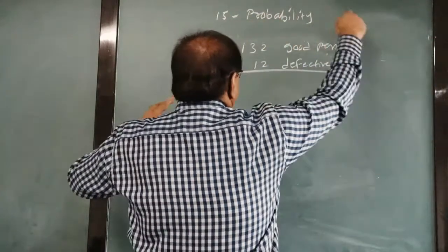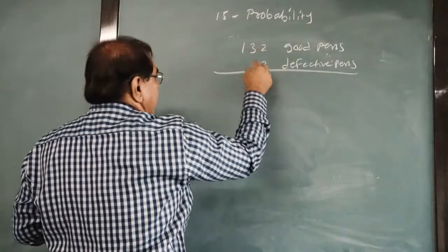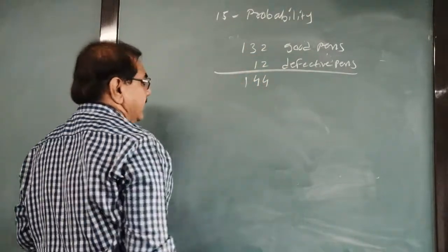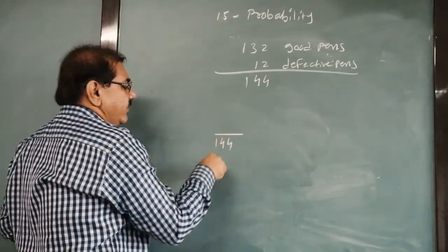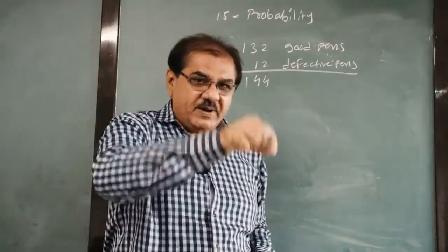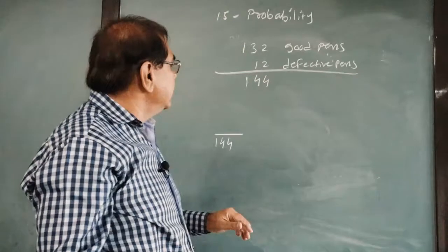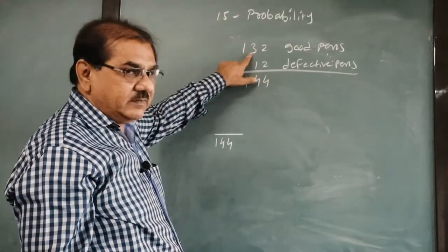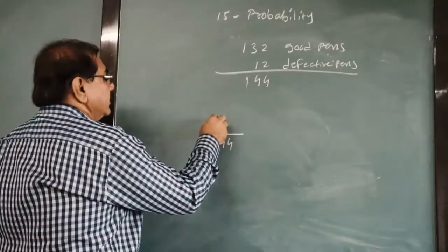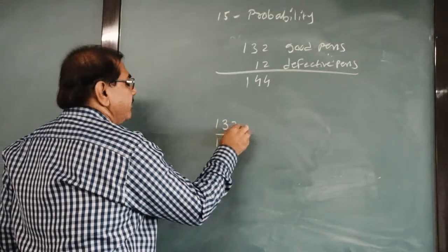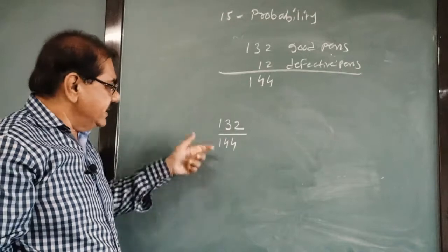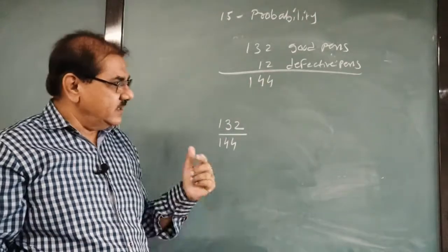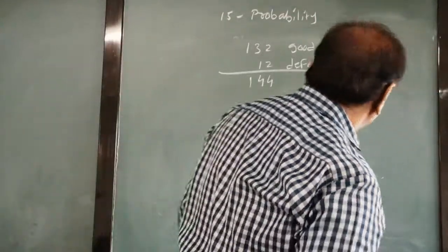Now out of this lot, one pen is taken out randomly. Then determine what is the probability that pen taken out is a good one. So what is the total number of pen in the box? 2 and 2, 4. 3 and 1, 4 and 1. So total outcomes is 144. And you have to pick up one pen randomly out of it. How many good pens are there? 132. So the number of outcomes favorable to the event is 132 upon 144. Simplify it and get the answer. So much easy it is.